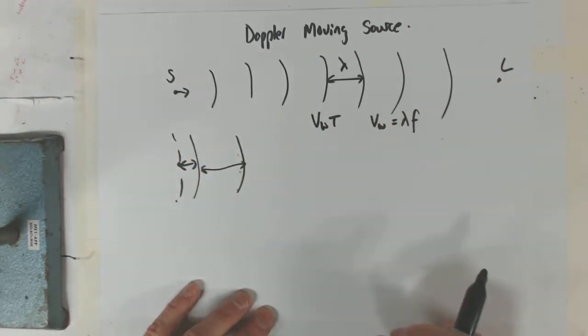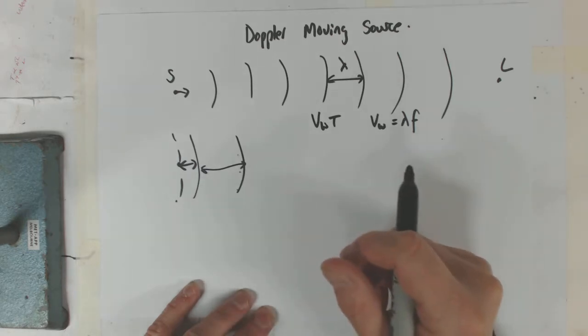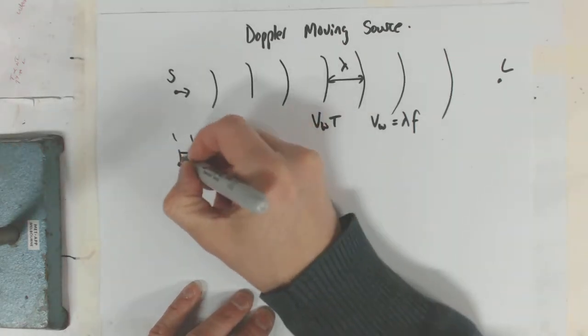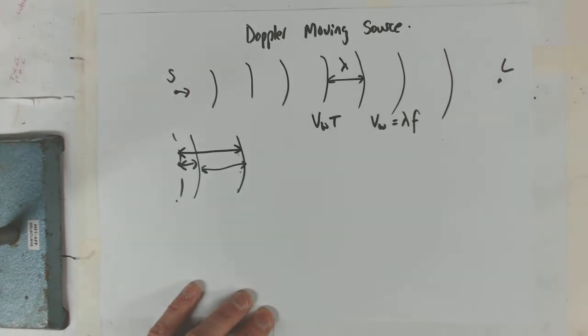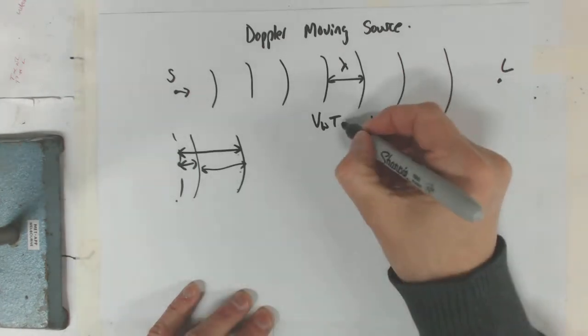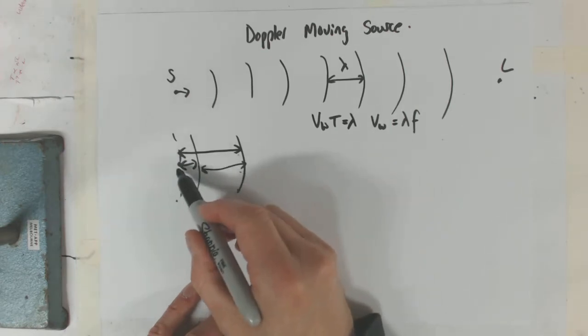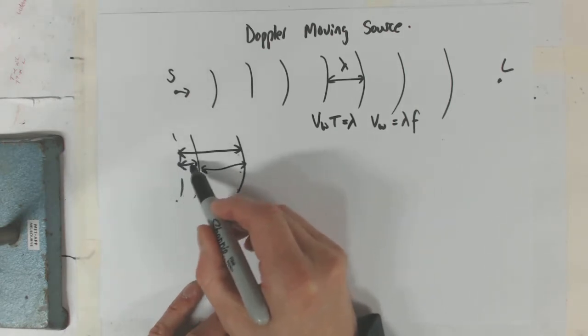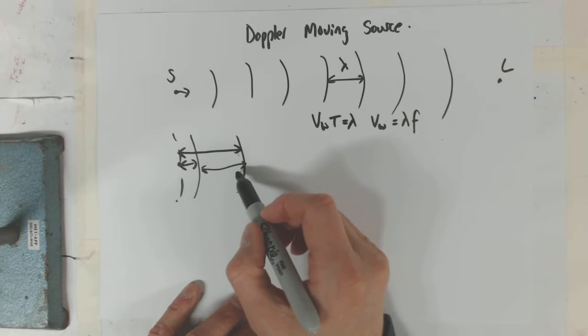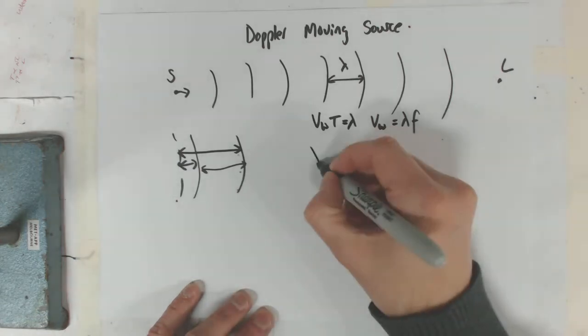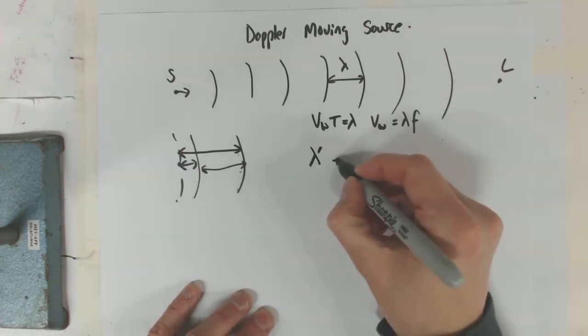Now if we look at this, we know because we just said this distance here equals VWT, it's the old wavelength, right? So we want to know what are these distances. We know this distance here, so we know the distance of the new wavelength, and I'll call the new wavelength wavelength dash.